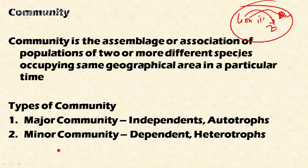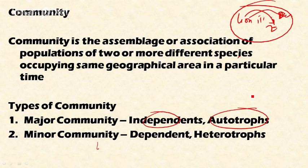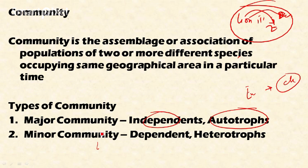There are two types of communities: major communities and minor communities. Major communities are large-sized, well-organized, and relatively independent — they have the ability to produce their own food using the sun's energy. For example, plants, blue-green algae, and some bacteria can generate their own food through sunlight, converting it into chemical energy. These are called major communities.